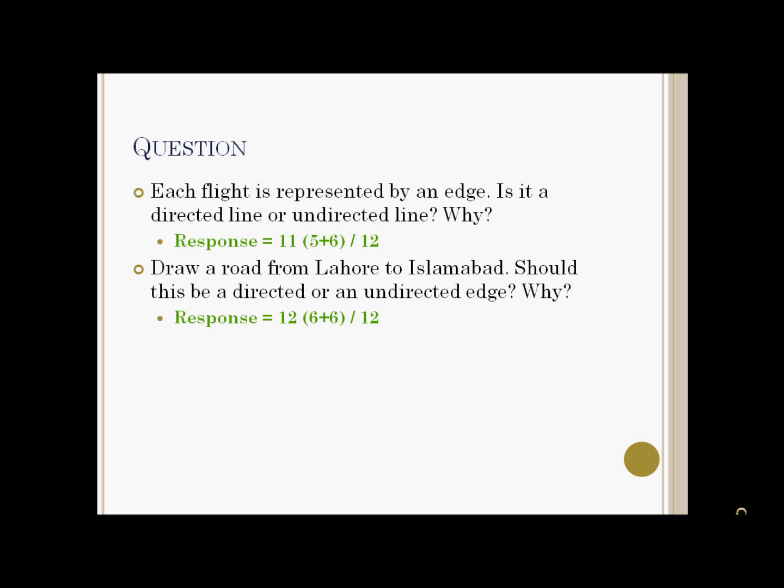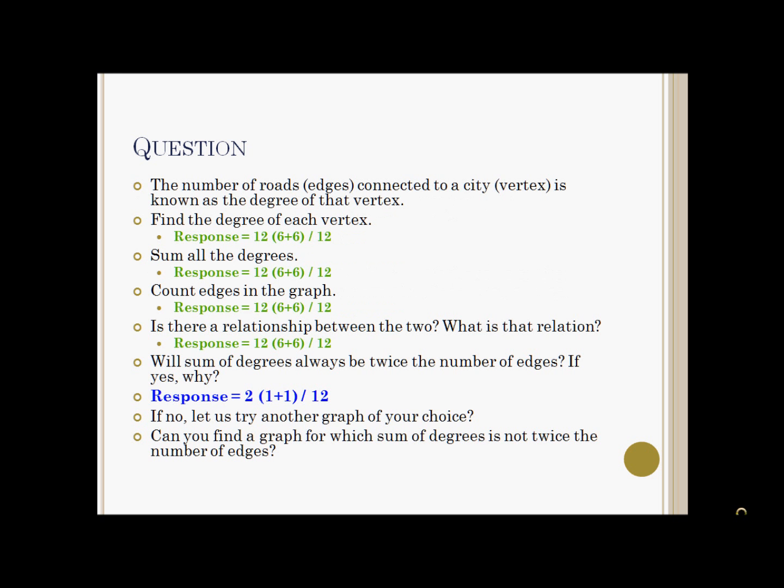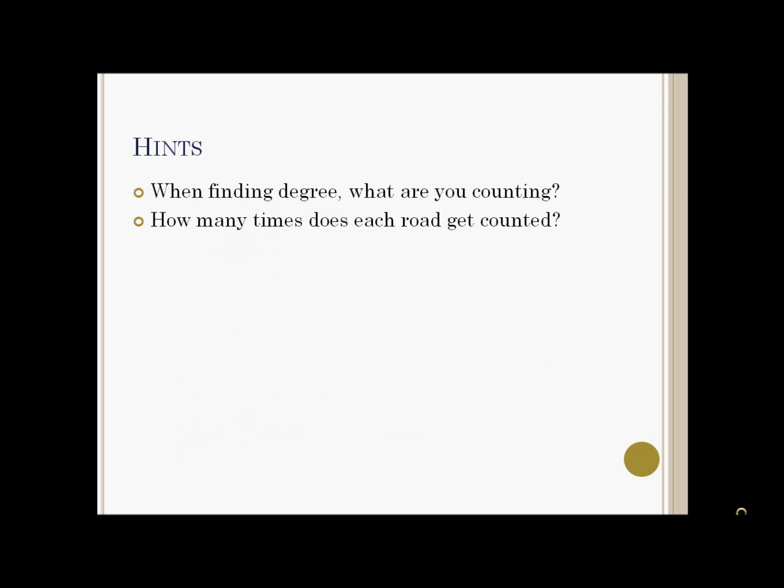Students showed understanding of directed and undirected edges. The students were then introduced to the concept of degree of a vertex. All students were able to find degrees of vertices as well as to discover the relationship between sum of degrees and edges, but they required a hint to understand why that relationship holds. The hints provided were: when finding degree, what are you counting? How many times does each road get counted?